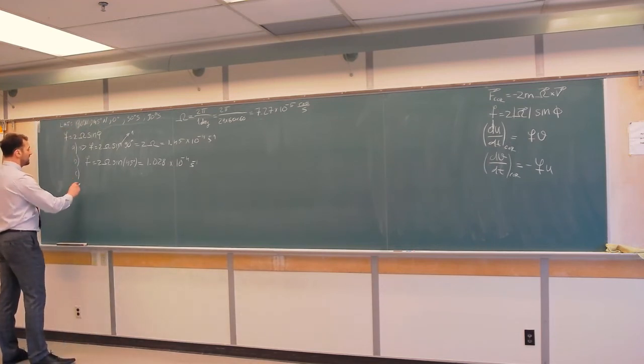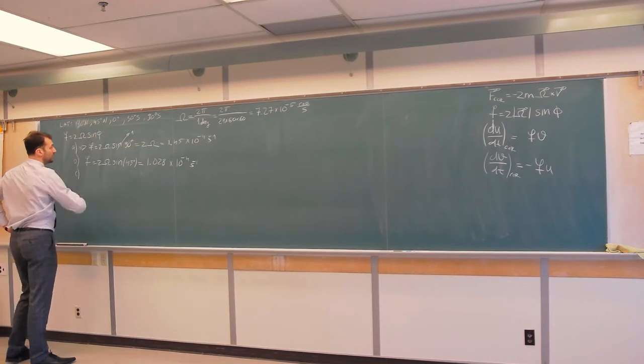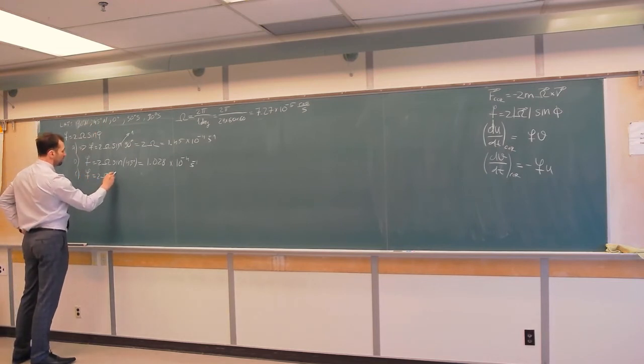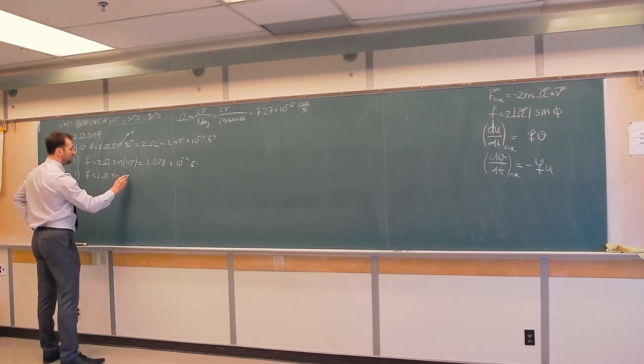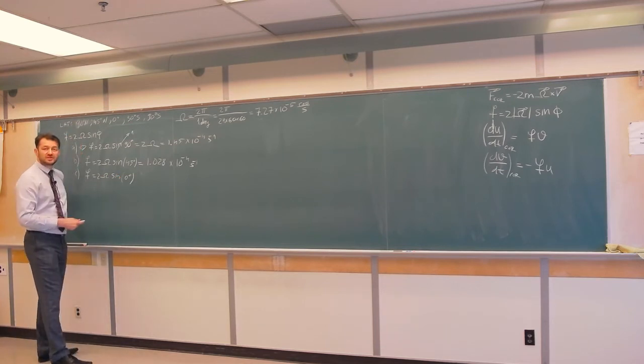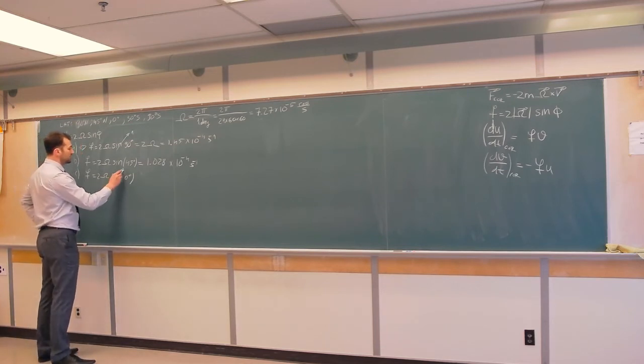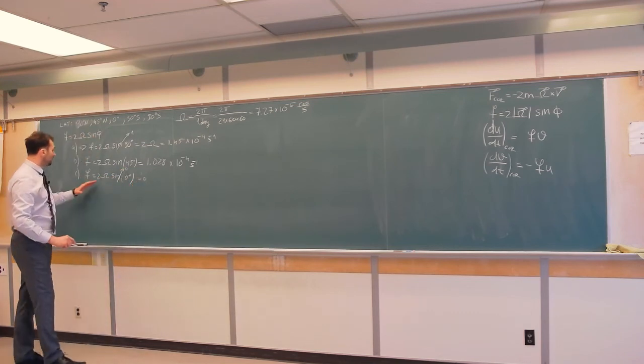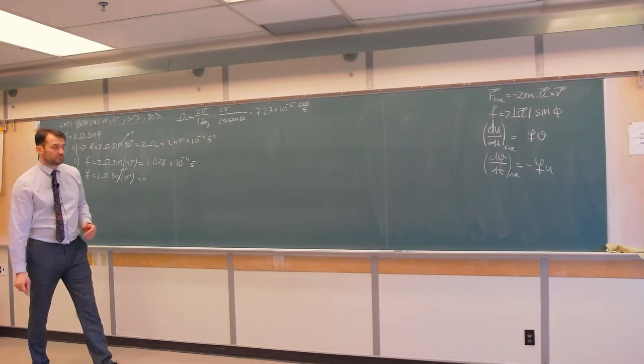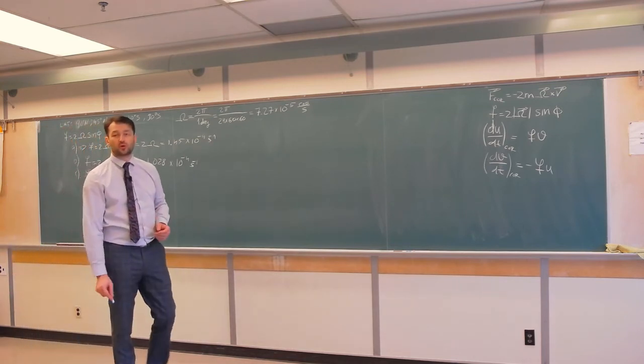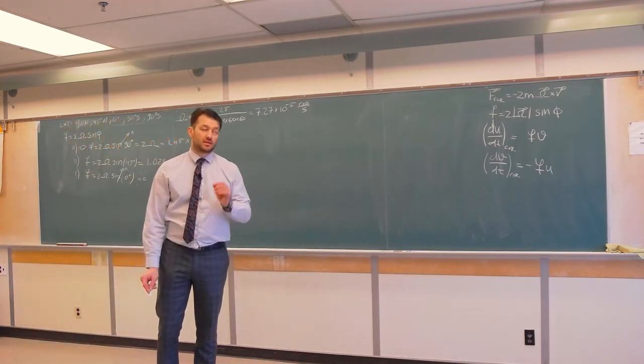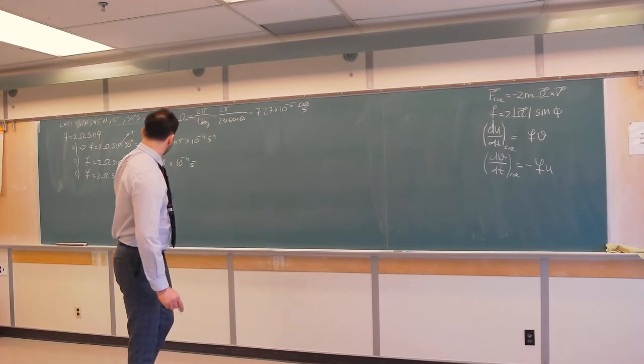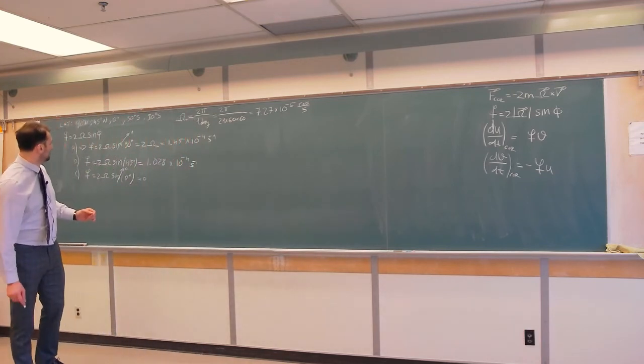C, calculate this quantity at the equator, 0 degrees. So, that is equal 2 omega sin of 0 degrees. But this is the easiest case because I know that sin of 0 degrees is 0. So, this becomes 0. Another demonstration that Coriolis force is indeed non-existent at the equator.